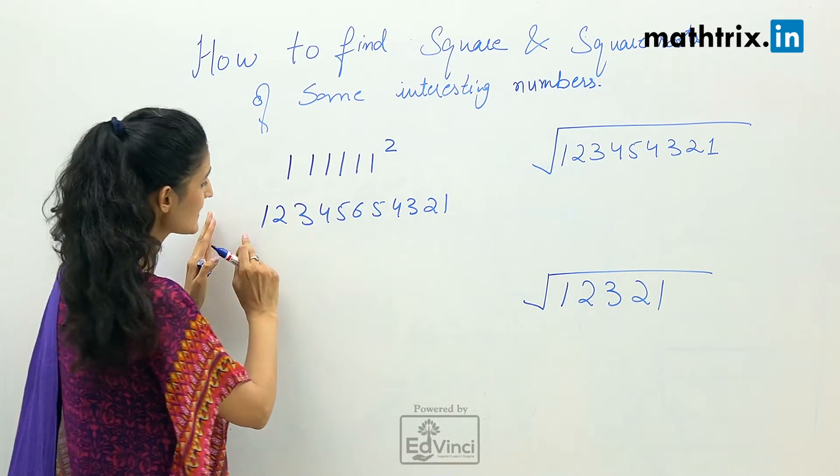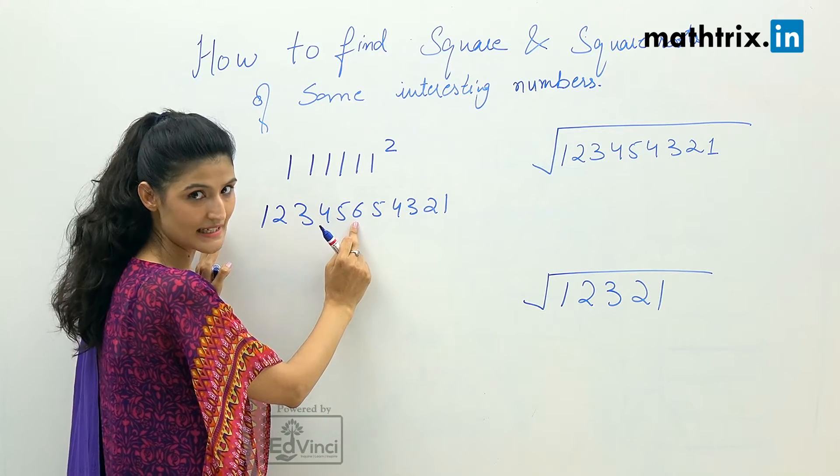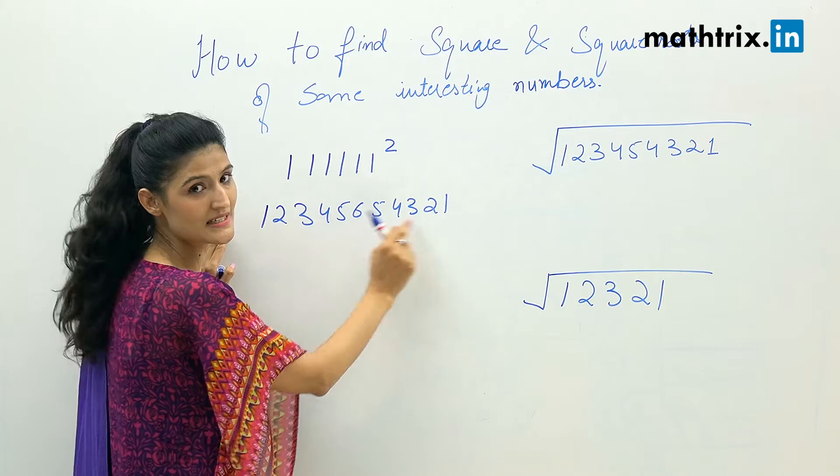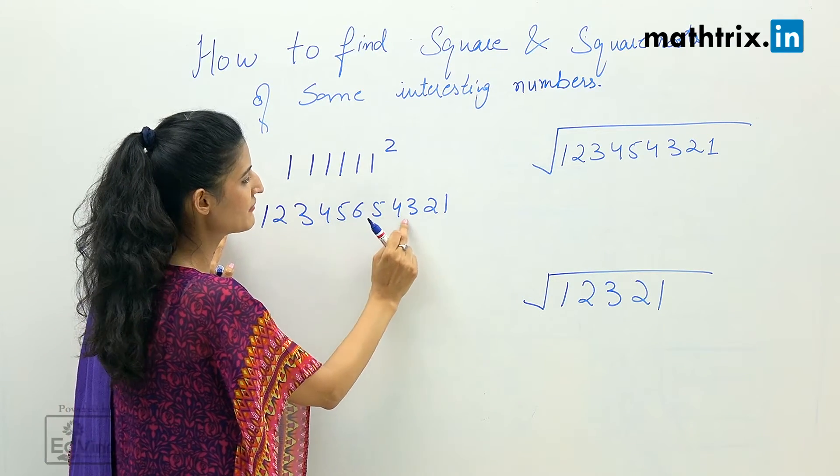One, two, three, four, five, six. We have six ones, so we'll start from one and we'll go to the ascending order: one, two, three, four, five till six, the number of ones we have. And then we start descending till one.